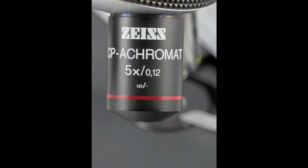You should always begin with the scanning objective, the one with the red band. This lens has the lowest magnification, and therefore the widest field of view and greatest depth of field. This makes it ideal for searching around on the slide to locate the object of interest.